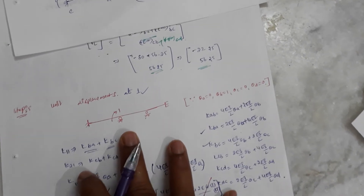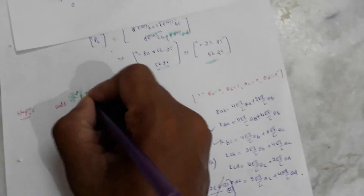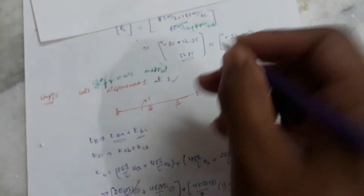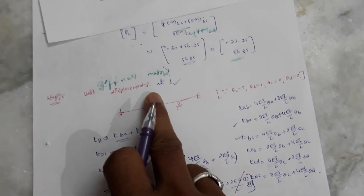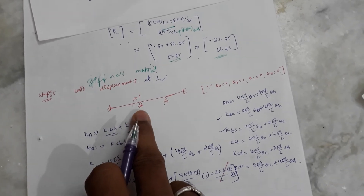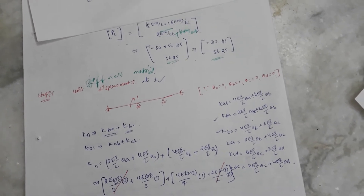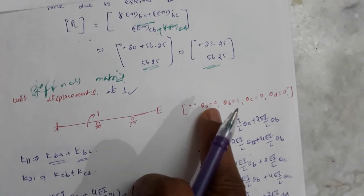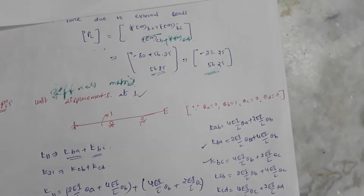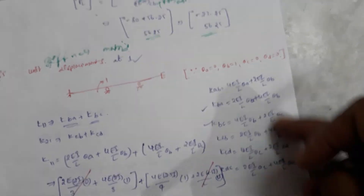Next, we find the stiffness matrix. To form it, we apply a unit displacement at coordinate 1. The boundary condition becomes: theta A equals zero, theta B equals 1, theta C equals zero, and theta D equals zero. This is a very important condition. From this, K11 is the force at coordinate 1 due to unit displacement at coordinate 1, and K21 is the force at coordinate 2.